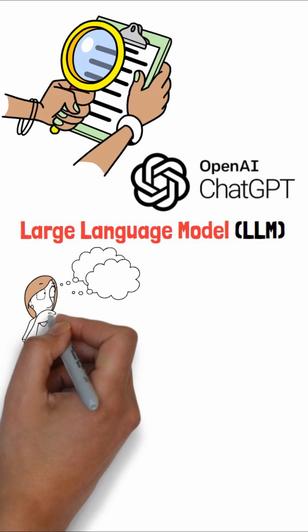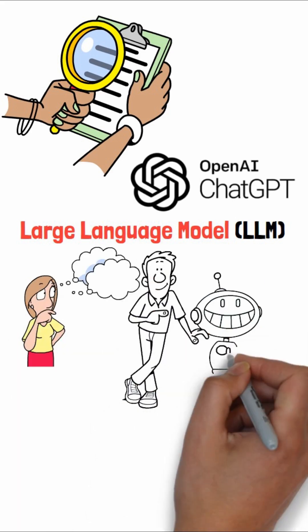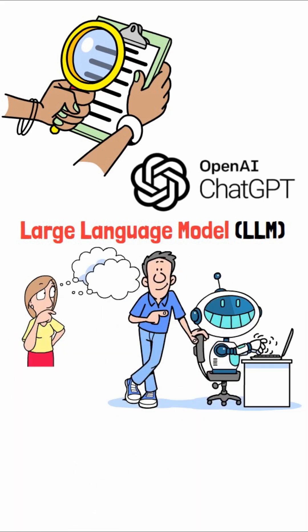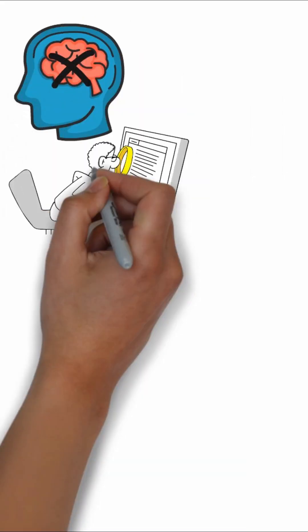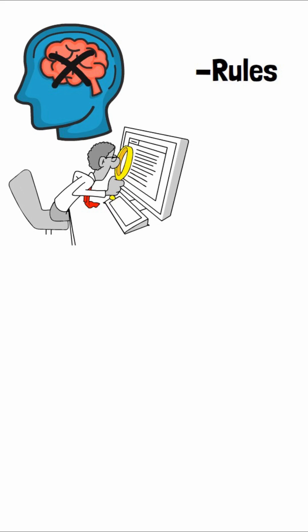Think of an LLM as a system that has read and learned patterns from trillions of sentences, articles, and code snippets. It doesn't just memorize, it learns the underlying rules of language, logic, and style.